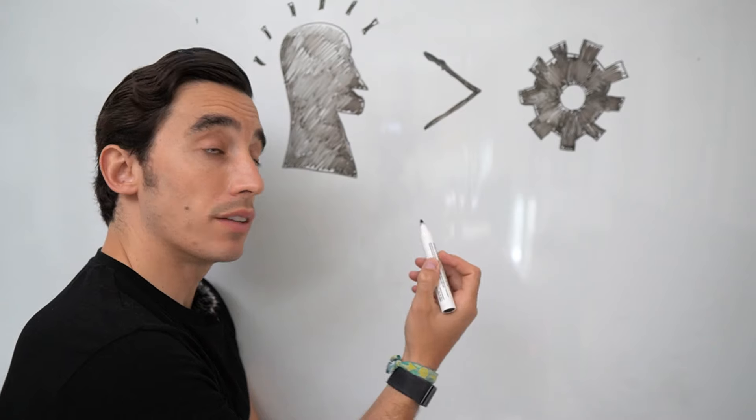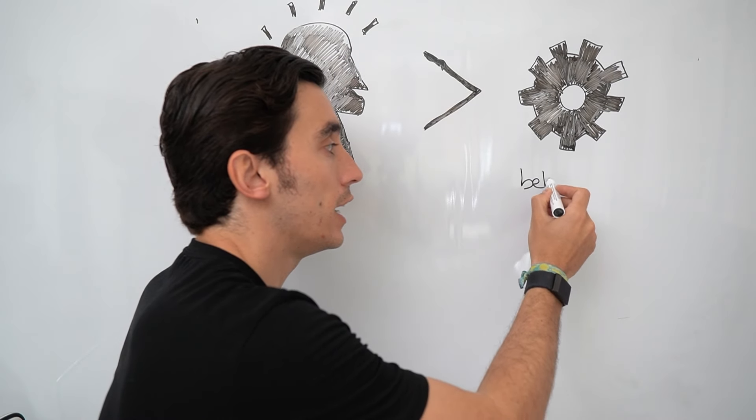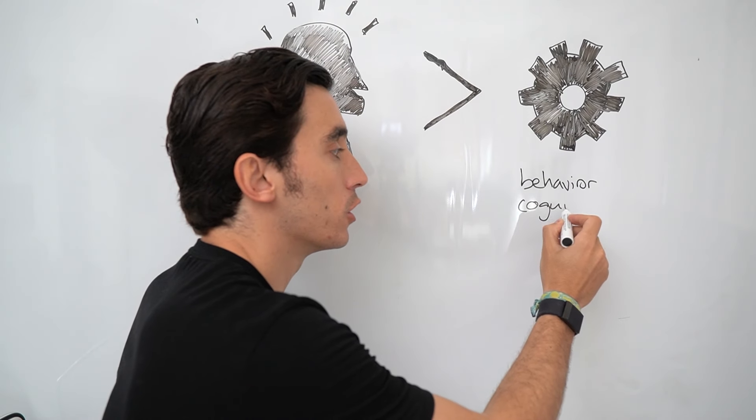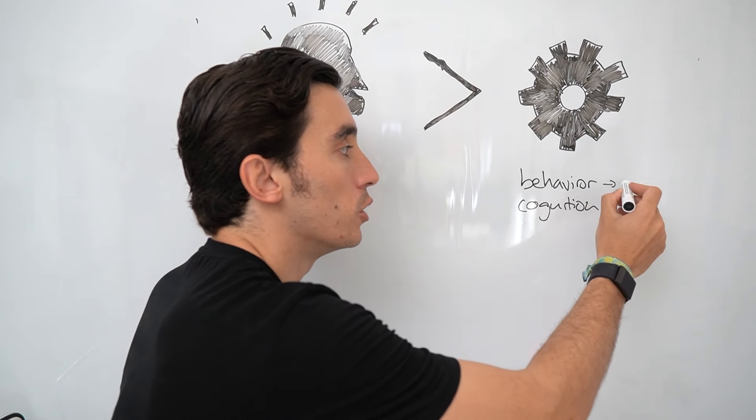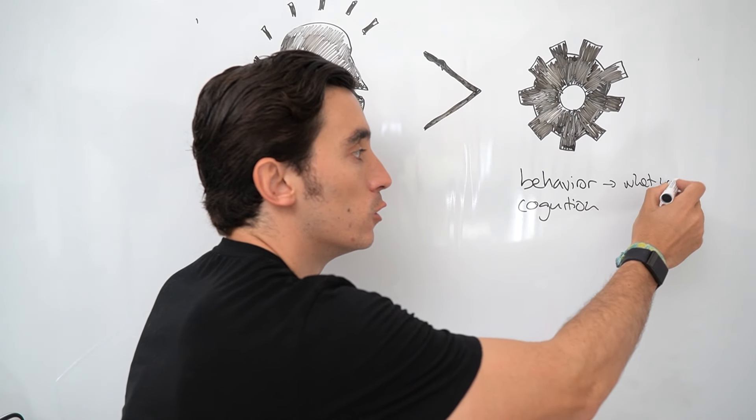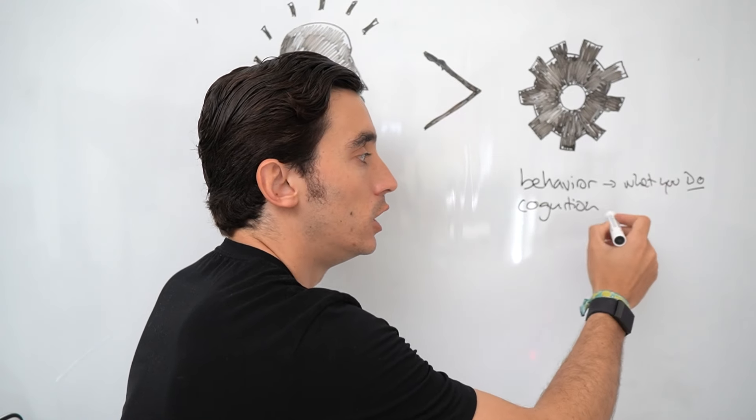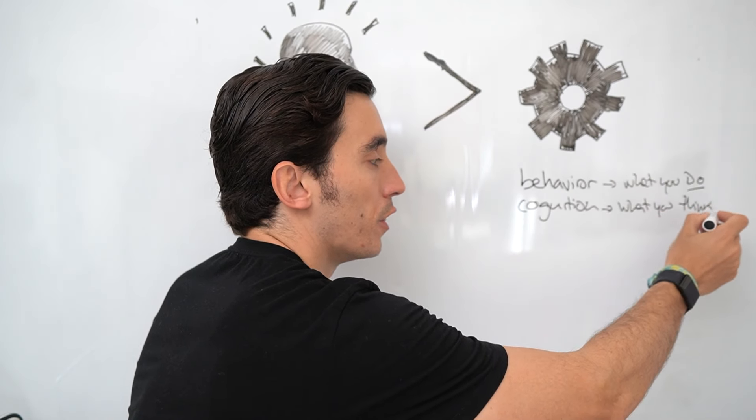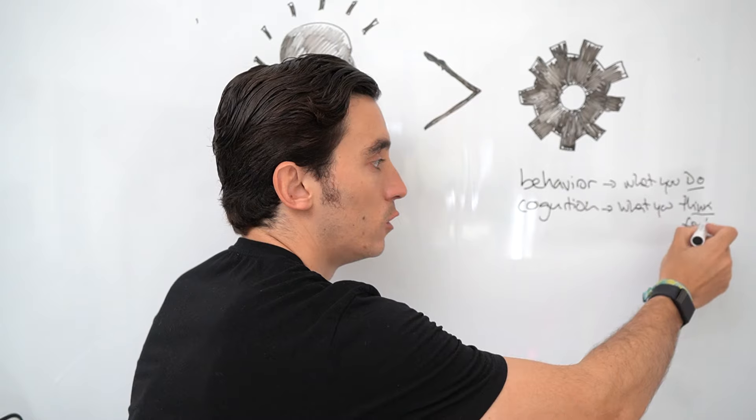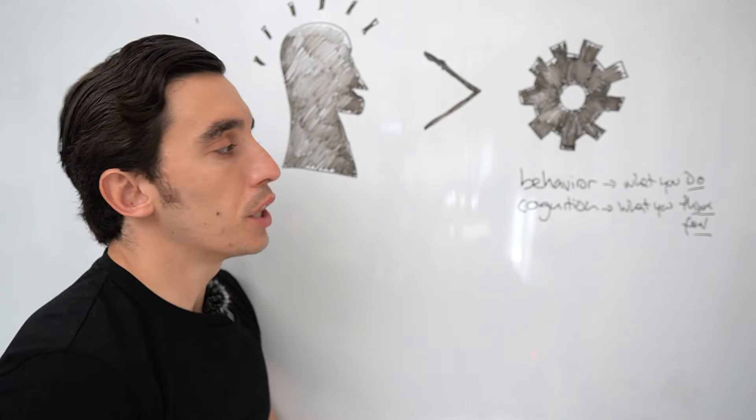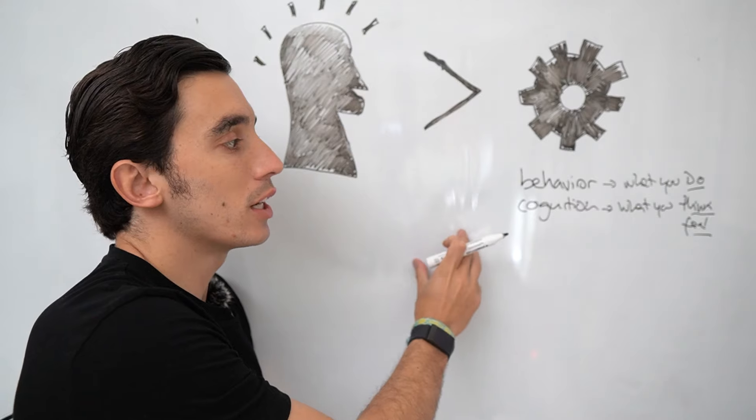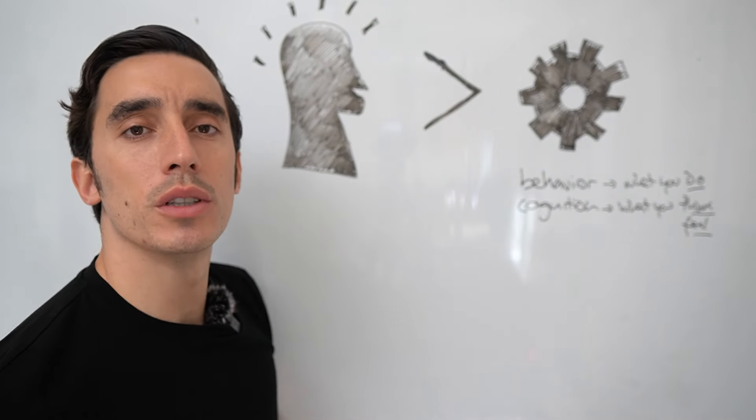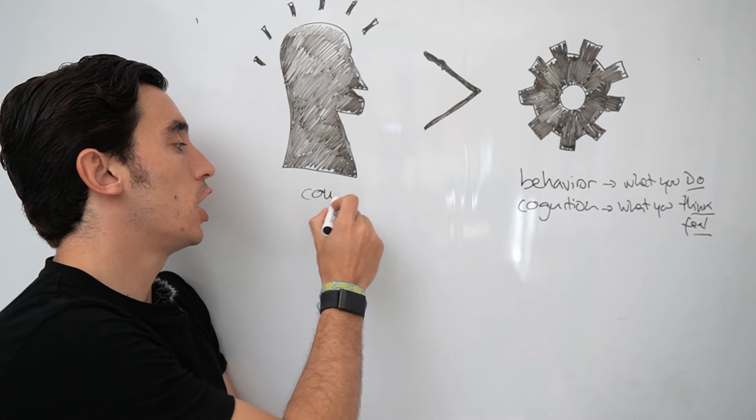It hinges on doing different things instead of becoming a different person. Most self-development advice is focused on the behavior and the cognition. Behavior is what you do. Cognition is what you think and feel. So do this, do that, think like this, think like that.